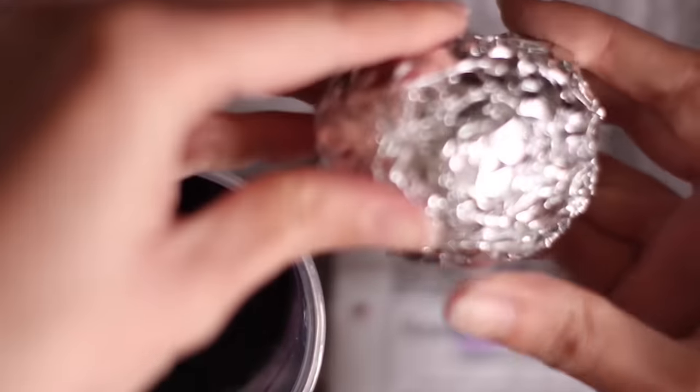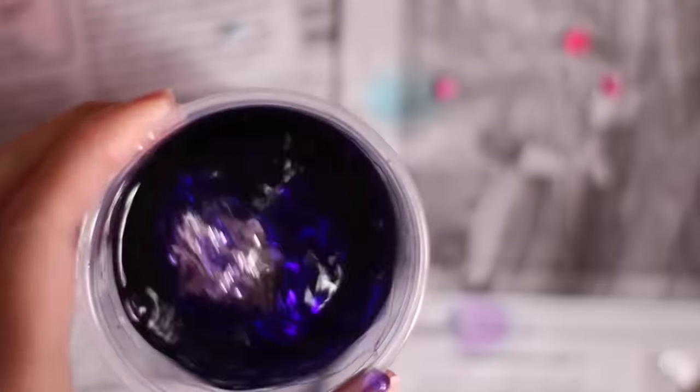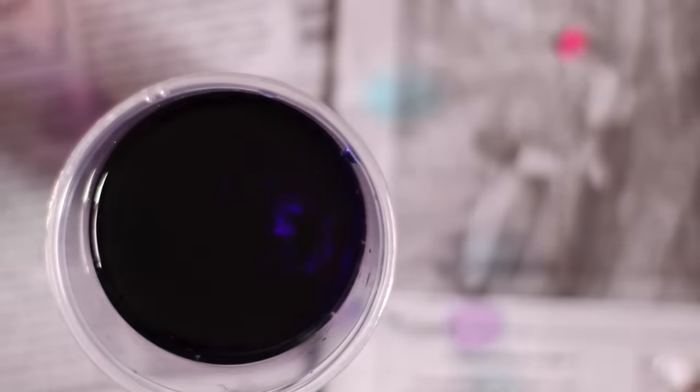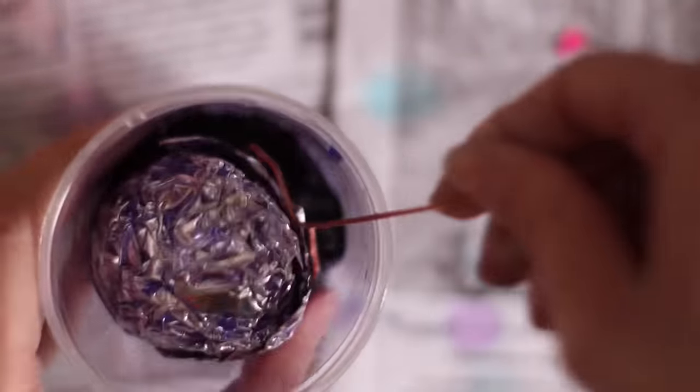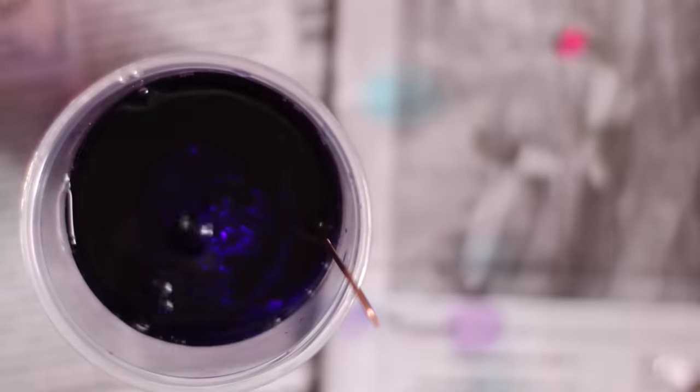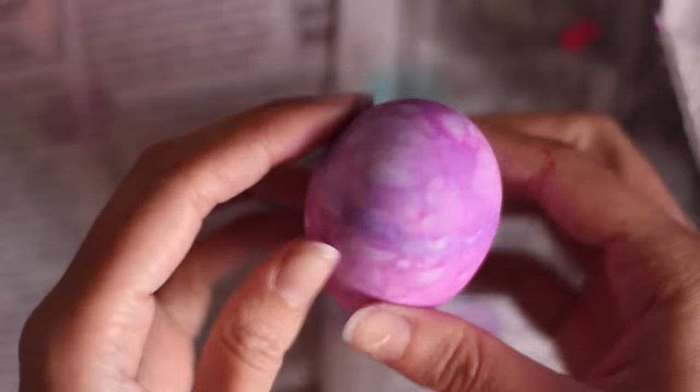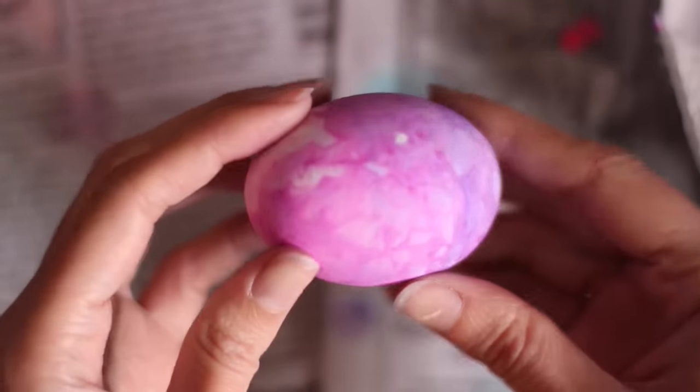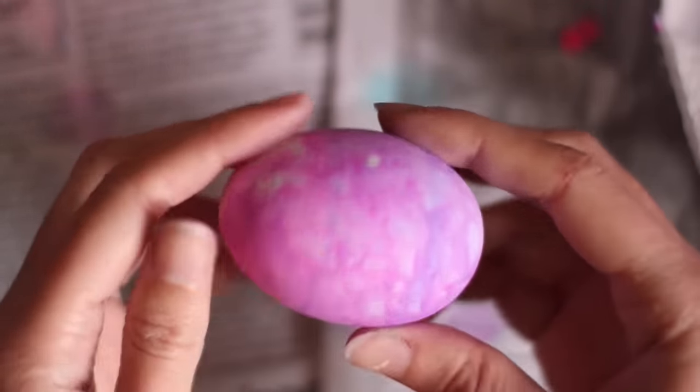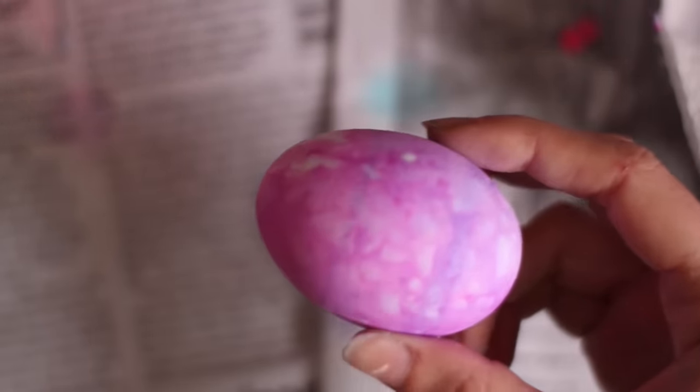Then put it in some dye. After it's in there a few minutes, you can take it out. Dry it off. And then take the tin foil off. And you can see that it left a cool kind of watercolor effect with the dye. So that's it for idea number three.